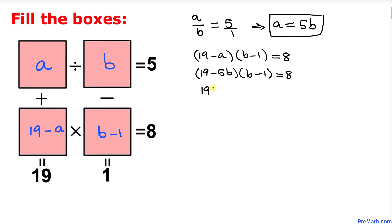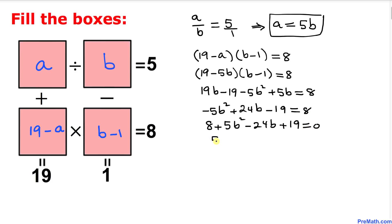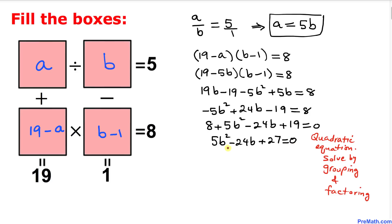Expanding gives us 19b minus 19 minus 5b² plus 5b equals 8. Combining like terms: negative 5b² plus 24b minus 19 equals 8. Moving everything to one side: 5b² minus 24b plus 27 equals 0. This is our quadratic equation.